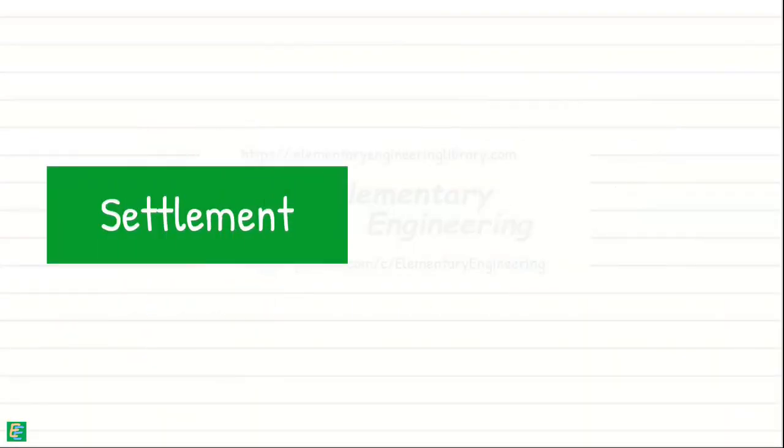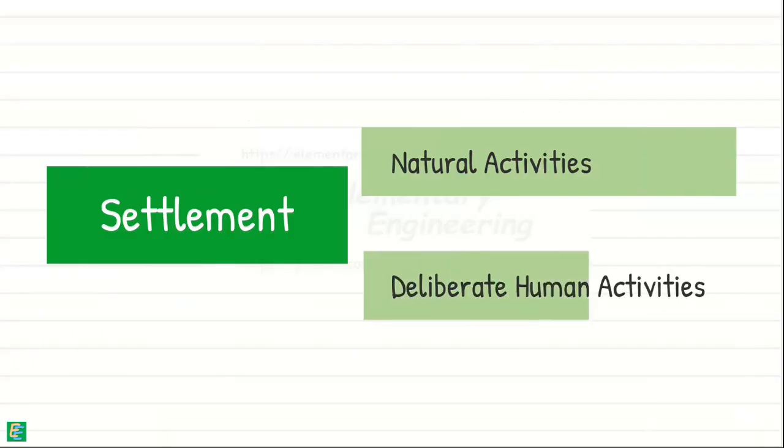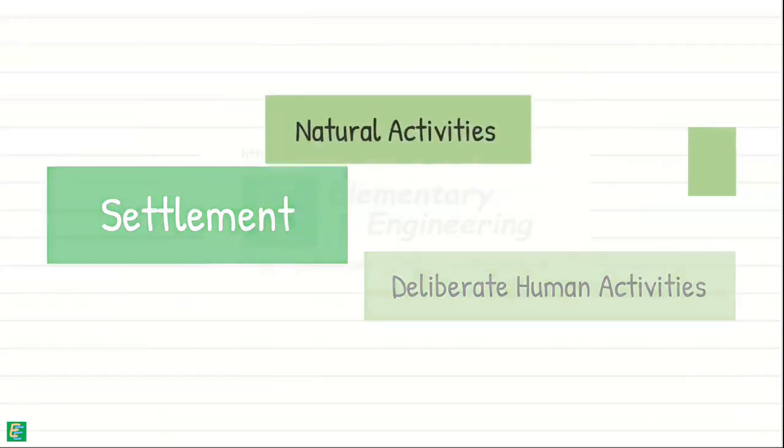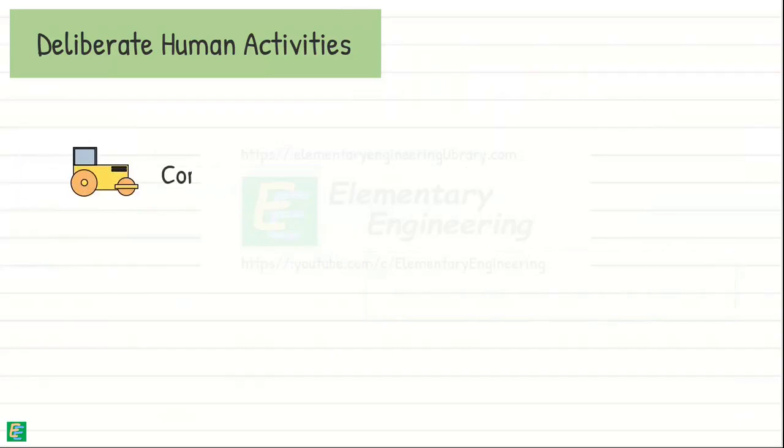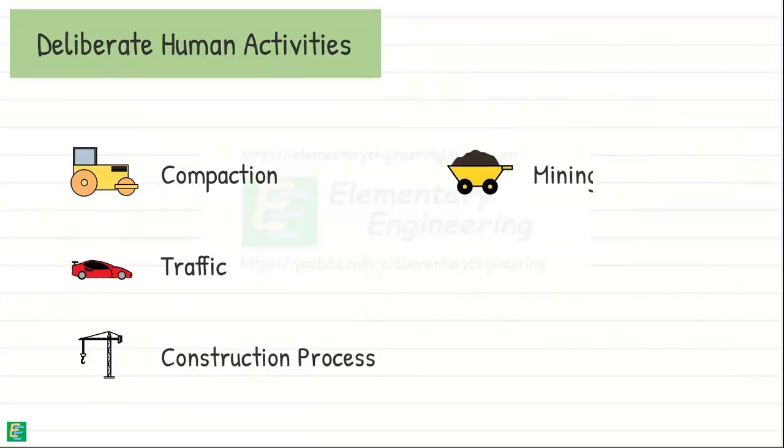Settlement in the soil may be the result of both natural or deliberate human activities. Natural activities that may contribute to the settlement of soil include organic decomposition, consolidation time, erosion, groundwater changes, etc., while human-induced settlement may include activities such as compaction, vehicle traffic, construction processes, mining activities, urbanization, etc.